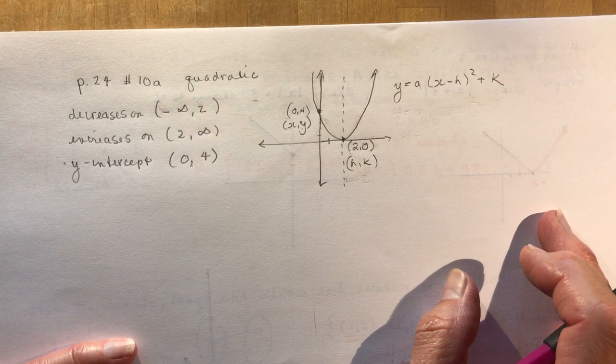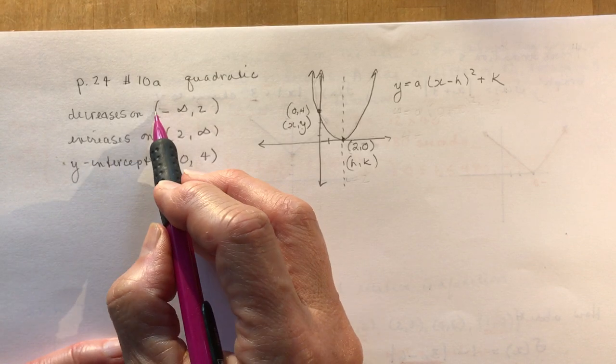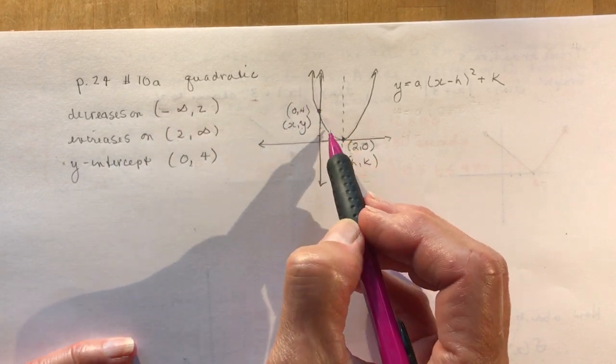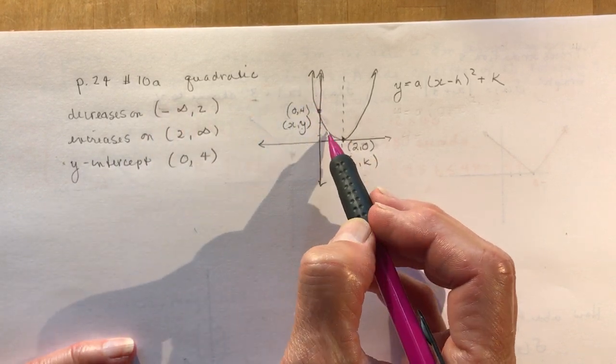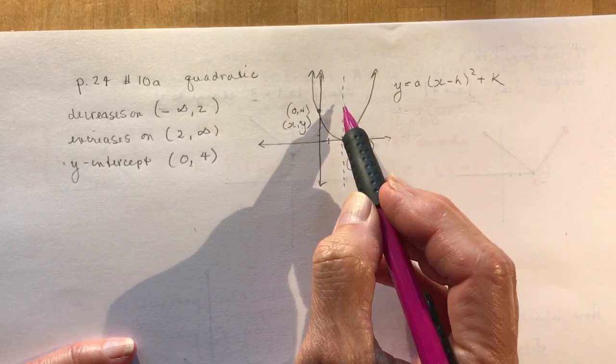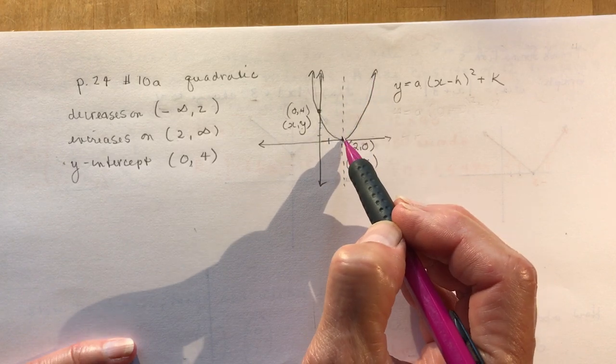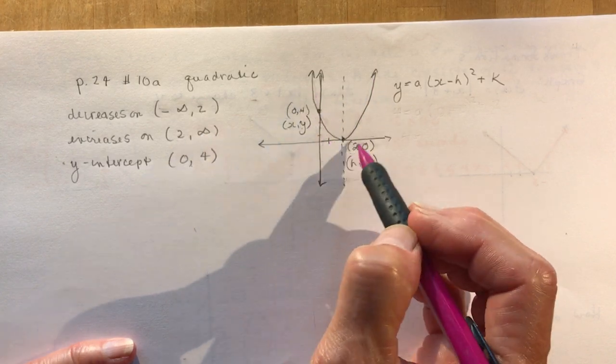The question tells you that you have a quadratic with the following properties. So it decreases from negative infinity to 2. So here it is, decreasing to 2, which has to be the axis of symmetry because this is where it's going to turn around and increase from 2 to infinity. So there's my graph.